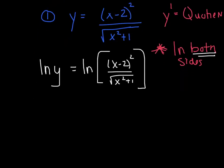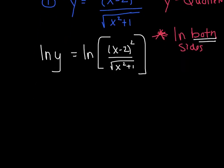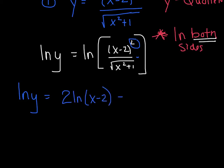Now we're just going to use our ln properties to expand. I have not done a lick of calculus - I'm just using ln properties. I would say the ln of y equals: I can split division by subtraction and take that exponent and bring it down. So I've got 2 ln of x minus 2 - these are just your 3 log properties reviewed from Algebra 2. This is really the square root of that, so I'm going to bring the 1/2 down in front of the ln of x squared plus 1. I just applied log properties; we have not done any calculus.